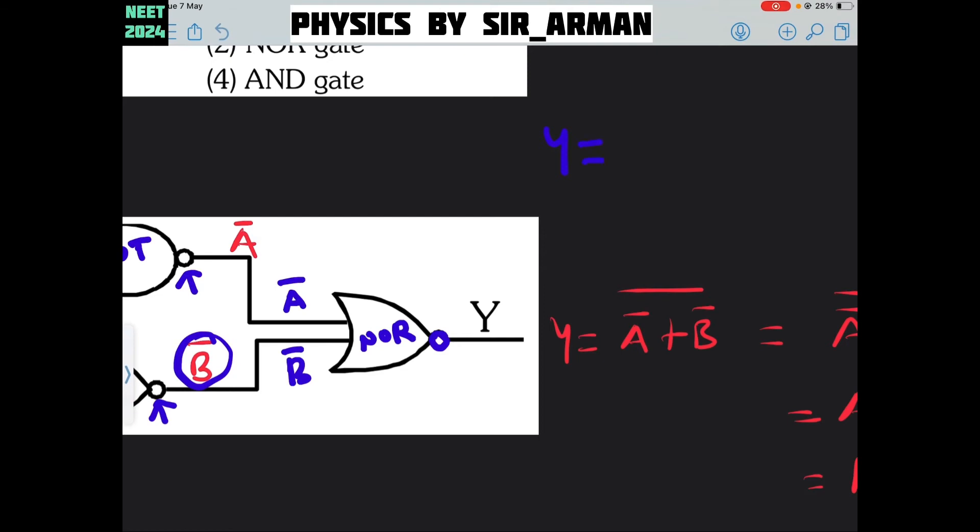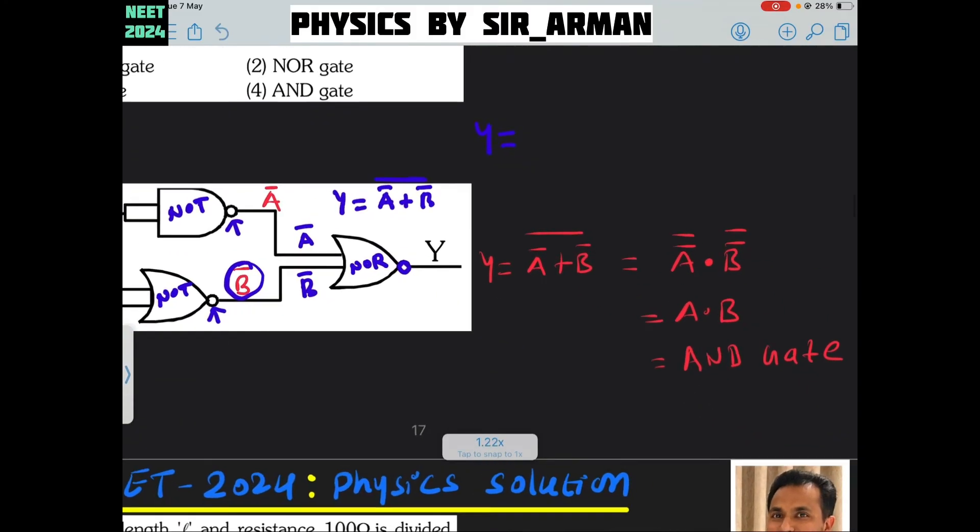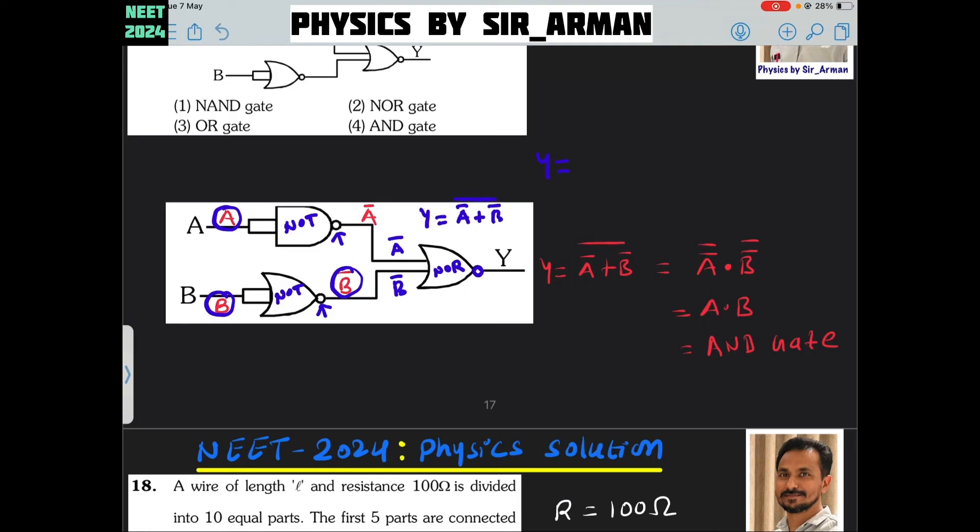For an OR gate, if you have an OR gate, then it is A plus B. Here it's A bar plus B bar. But this is a NOR gate, not OR gate, means it will again get inverted. We can put a bar on the final expression. The output will be A bar plus B bar, the whole bar.